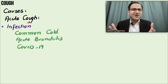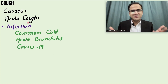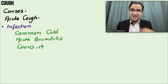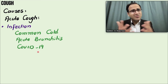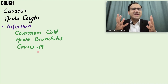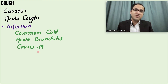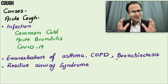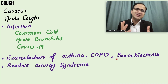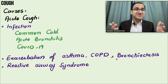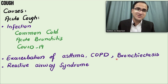The most common cause of acute cough — as many of you may have experienced — is infections: common cold, acute bronchitis (inflammation of the bronchi), and COVID-19 infection, which has been the main hallmark symptom in recent years. Exacerbation of asthma, COPD, and bronchitis are also common causes of acute cough.